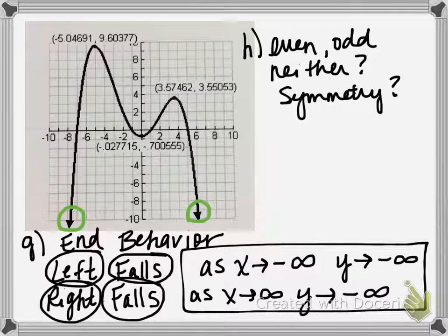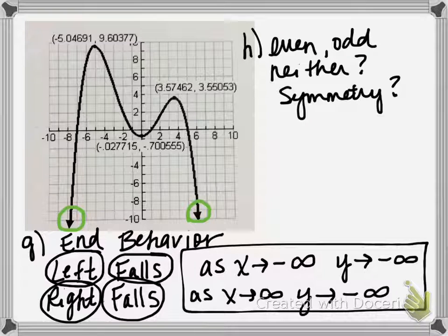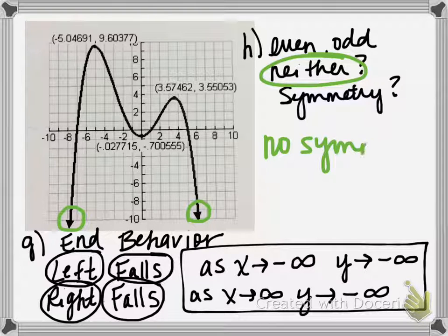Finally, is the function even, odd, or neither — and does it have any symmetry? Even functions can be folded across the y-axis with a mirror image, but this function does not have y-axis symmetry. Odd functions can be rotated 180 degrees, and this one also does not have that type of symmetry. So this function is neither even nor odd, and therefore it has no type of symmetry.